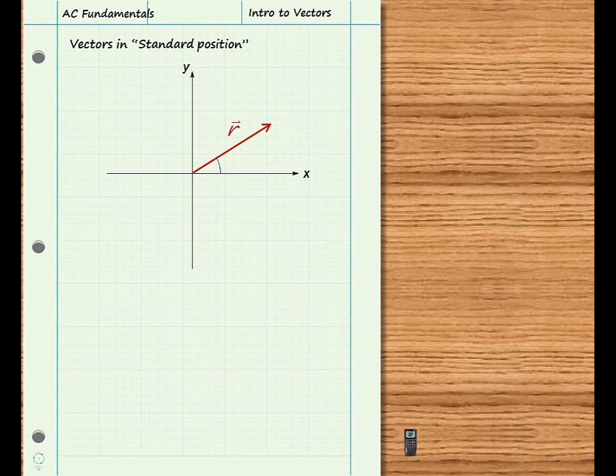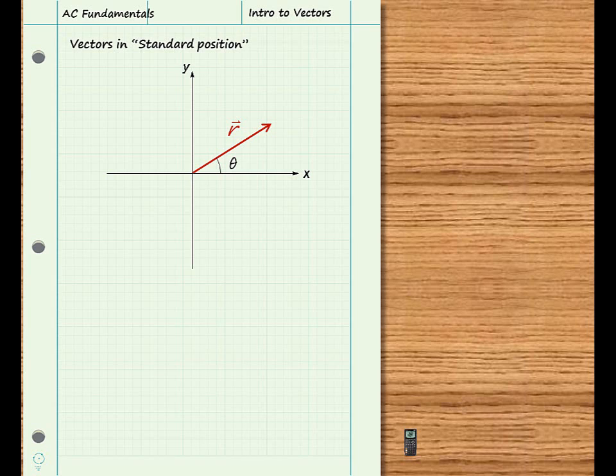The angle that represents the vector's position is measured counterclockwise from the positive x-axis. This angle may be labeled using the Greek letter theta, but phi or some other variables are also commonly used. In this series, the angle theta will be measured in degrees.